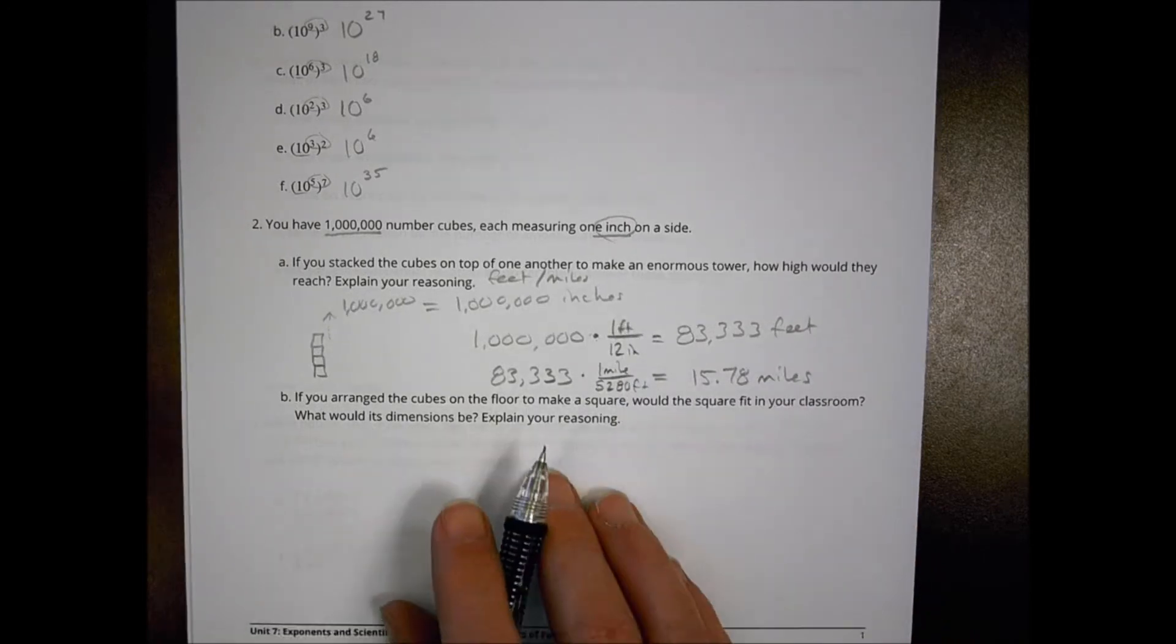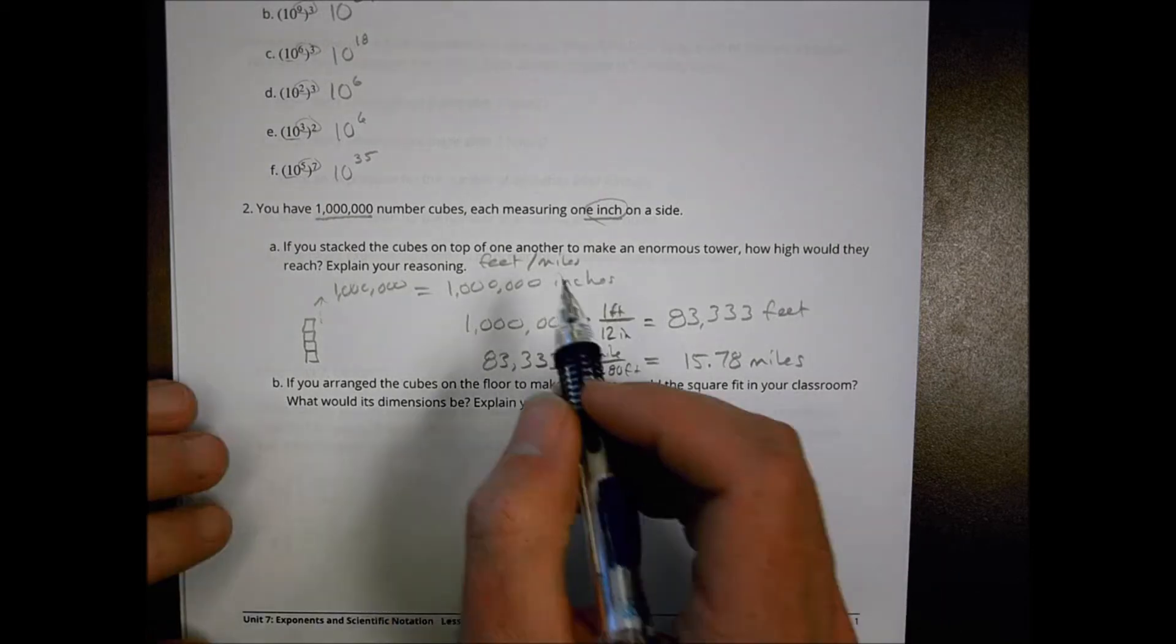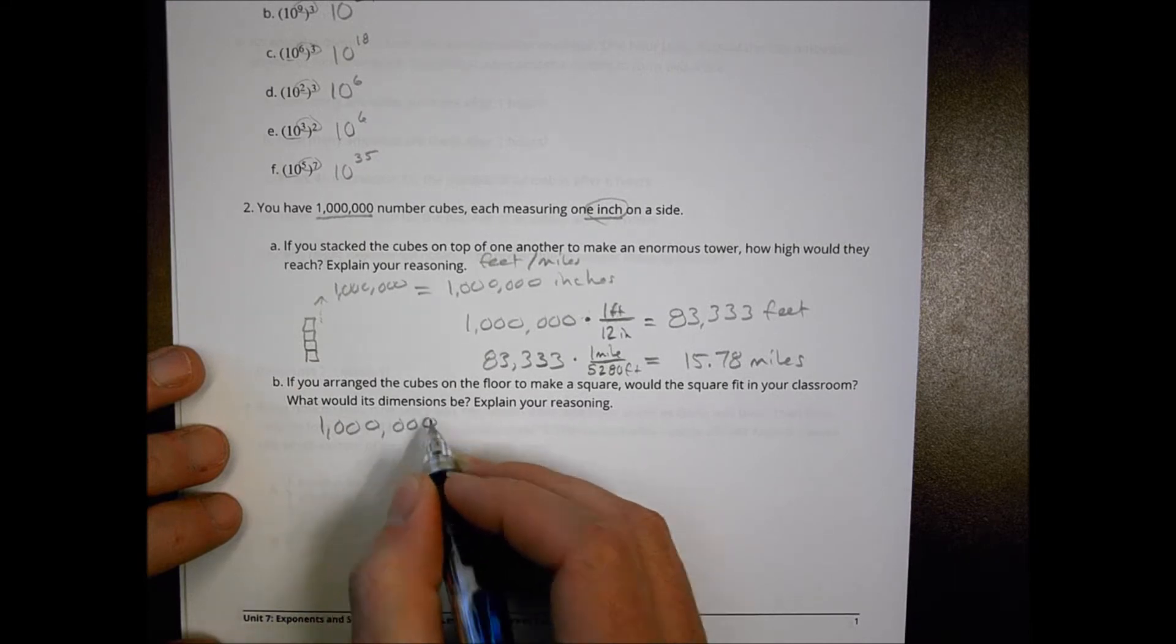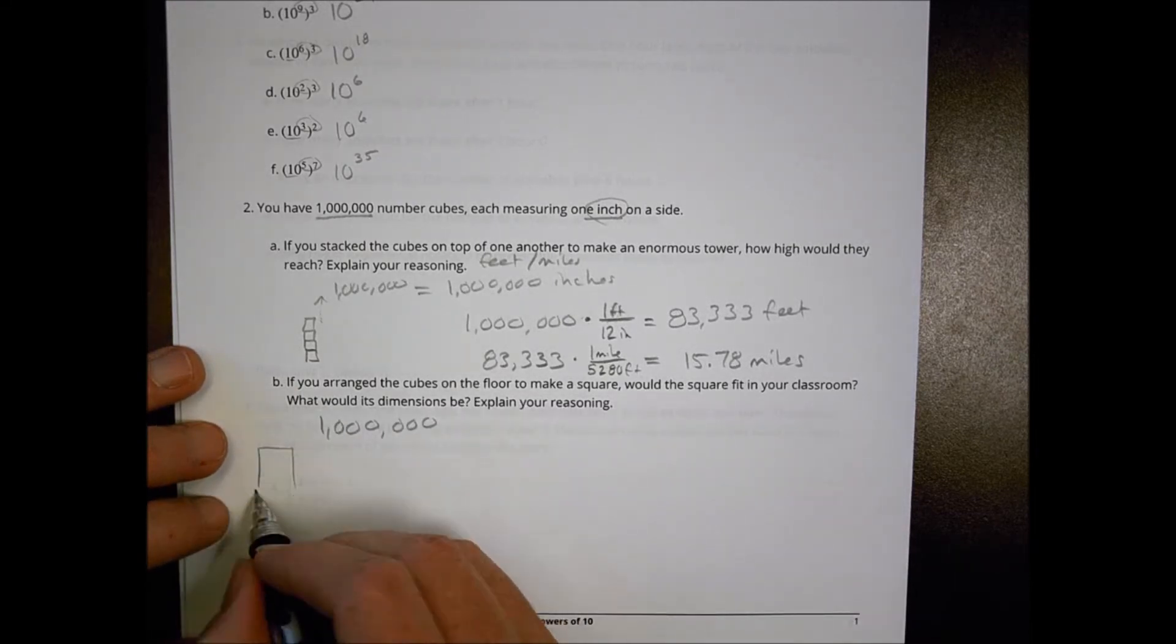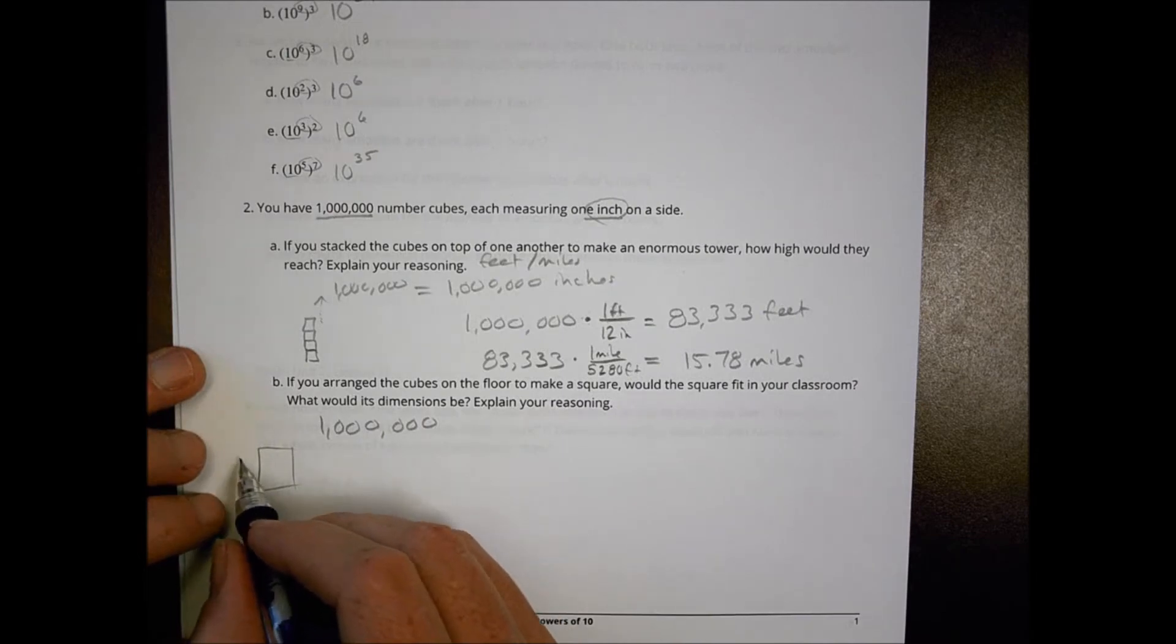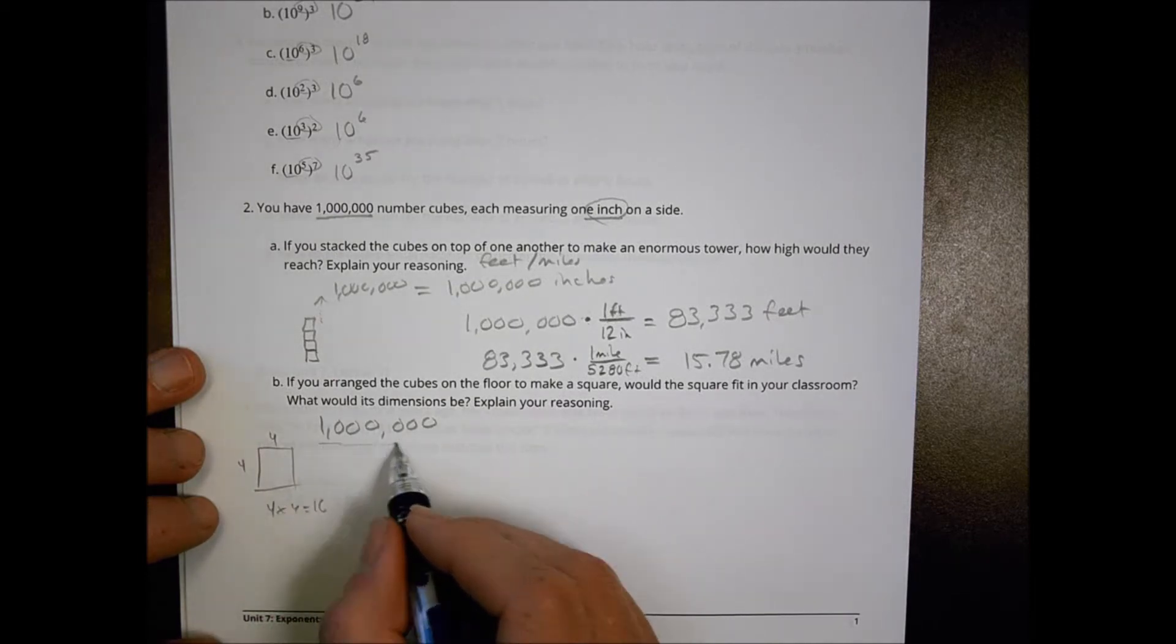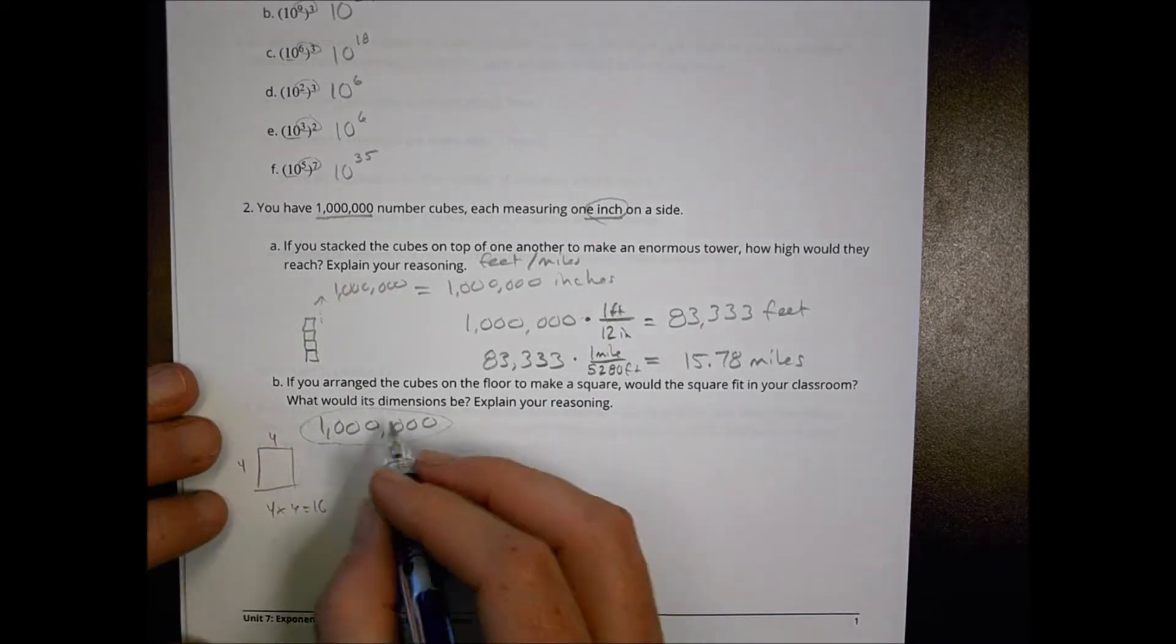If you arrange the cubes on the floor to make a square, would the square fit in your classroom? To make it a square, a square comes when I have the same number. Let's just say 4 times 4 and I multiply it together to get 16. I want to think of two numbers I can multiply together that's going to get me to a million.